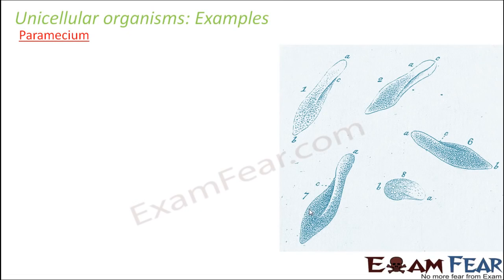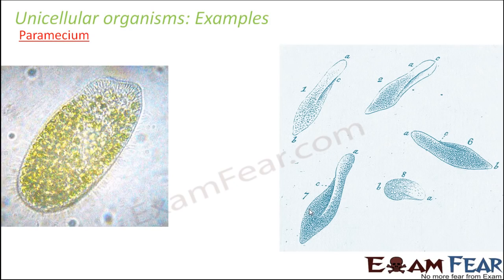The third example is paramecium. They have cilia for locomotion and are also a type of protozoa. We find them generally in freshwater or marine environments. They are often termed the 'slipper animal' because of their shape, which resembles a slipper.